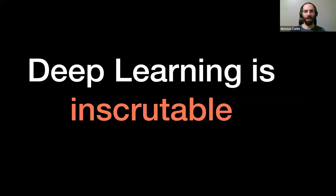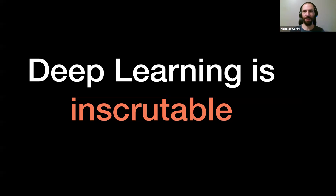What this comes down to is the fact that these recent deep learning models are essentially inscrutable. We have basically no way of understanding exactly what they're doing. People have been working really hard on this as a research topic and have made some progress, but machine learning models are essentially impossible to describe in terms of what they do.